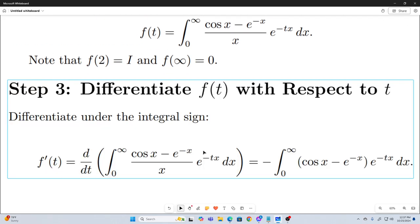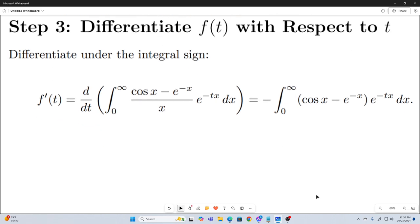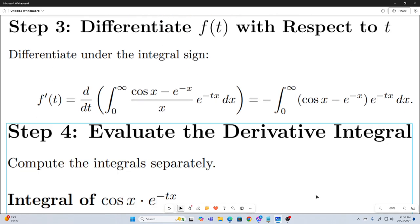All right. So next we're going to differentiate our function of t with respect to t using the Leibniz rule for differentiation under the integral sign. So what that allows us to do is bring this derivative right inside the integration. And if you take the partial with respect to t of this integrand, you know that this x will cancel out and it will introduce a negative sign. So this is what we end up getting.